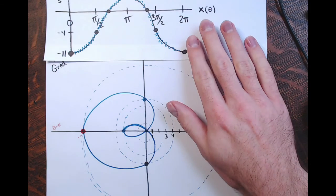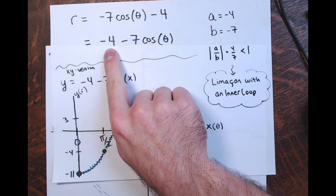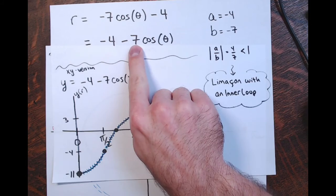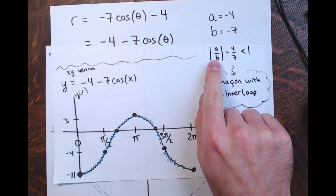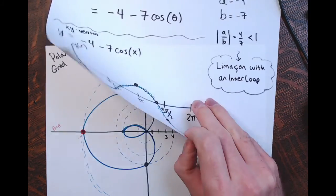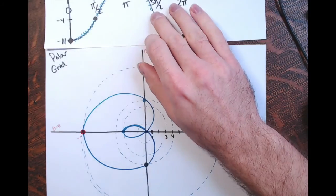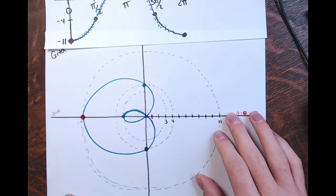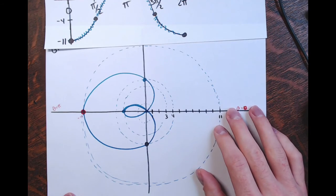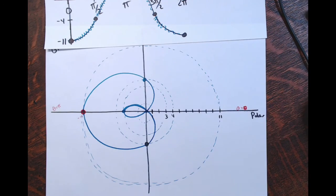That's because the ratio of the constant term to the coefficient had a magnitude less than 1. If I did a over b and looked at the magnitude, the absolute value was less than 1 — telling me that I have a Limaçon with an inner loop.